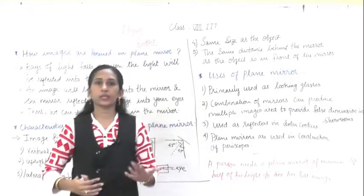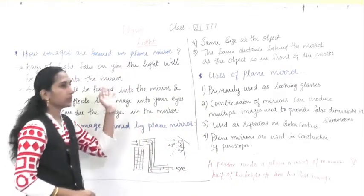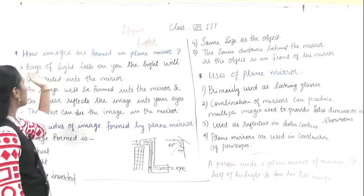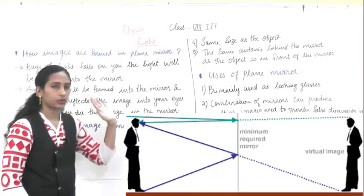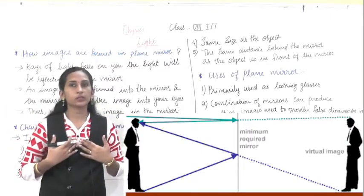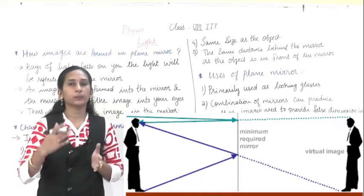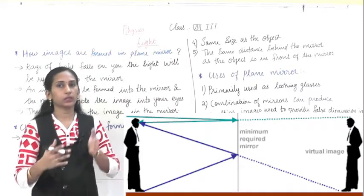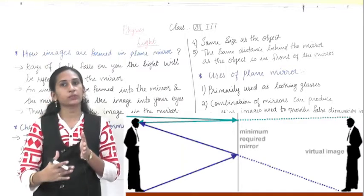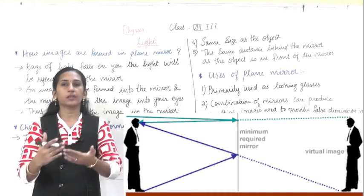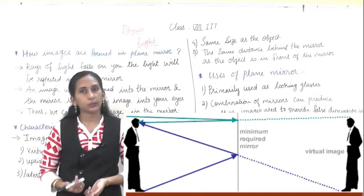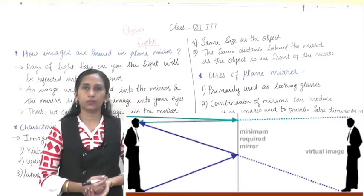I explained this in the last lecture also, but again I will explain it in short. Rays of light fall on you. When the rays of light fall on us, they reflect on the mirror. The light reflects into the mirror, and inside the mirror an image is formed, and that image is reflected back to our eyes. This is how the image is formed by the plane mirror.